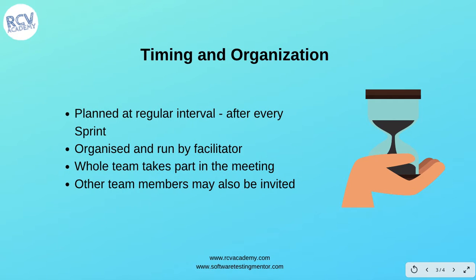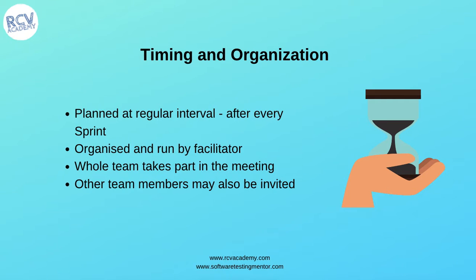Next is timing and organization. Retrospectives are planned at regular intervals — after every sprint or iteration in agile development. In Scrum, a retrospective meeting is planned after each sprint. These meetings are organized and run by a facilitator, and the whole team takes part.